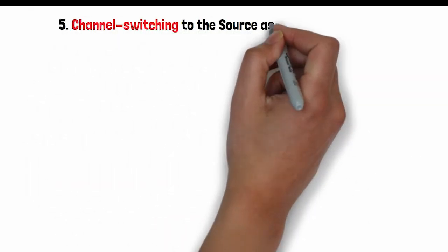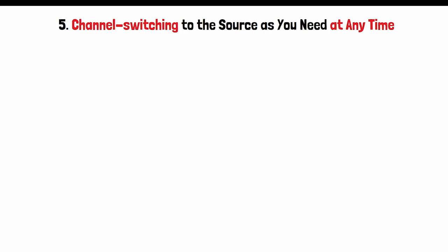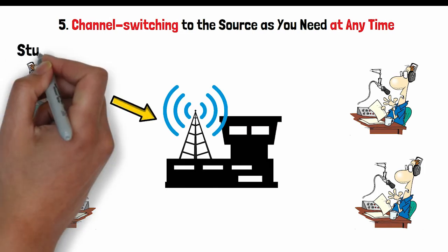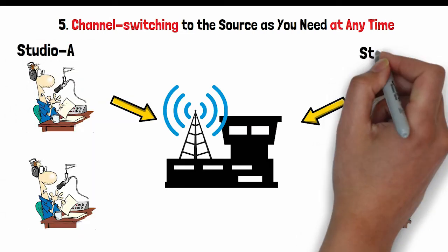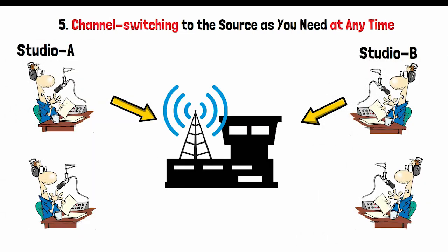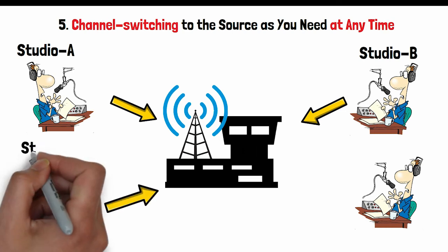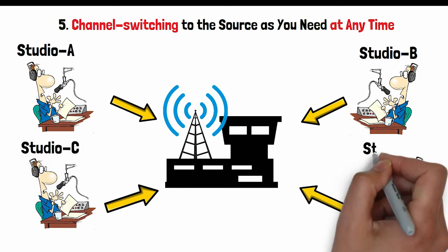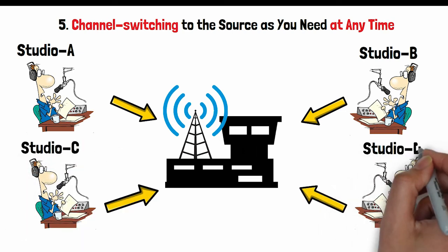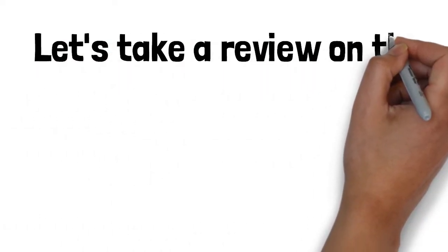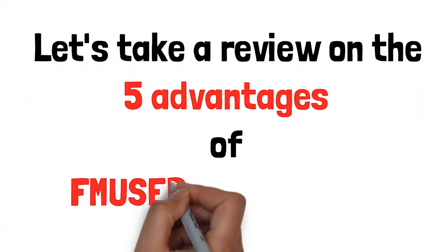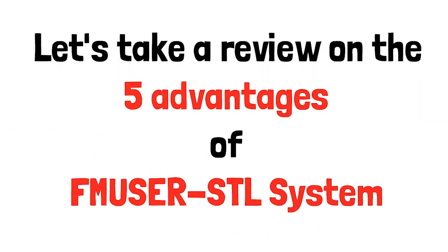Last but not least, you can switch to any source at any time as needed. The local broadcasting station can switch to another channel in the broadcasting program menu at any time. Let's take a review of the five advantages of the FM User STL system.